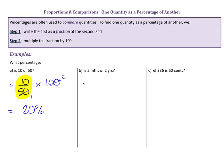Okay, 5 months of 2 years. Now these are in different units so we're going to have to change that 2 years to 24 months. So 2 times 12. So here it's going to be 5 over 24 times by 100.